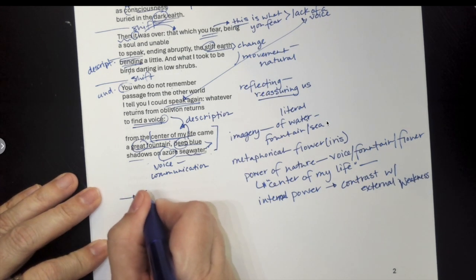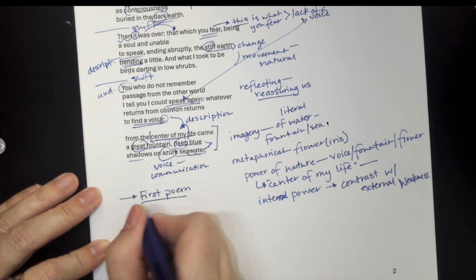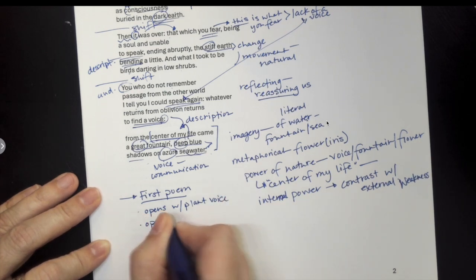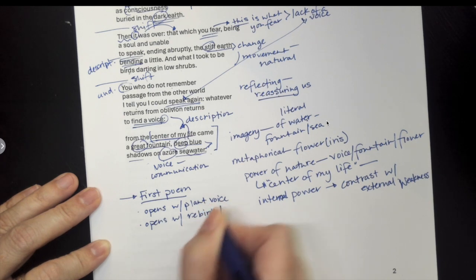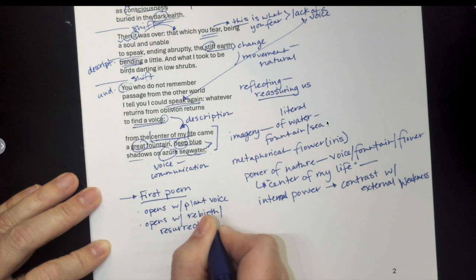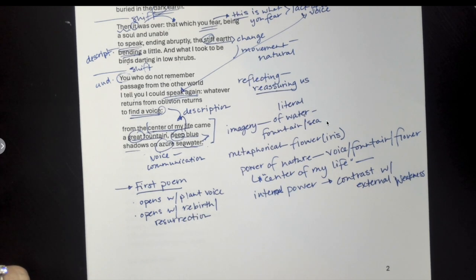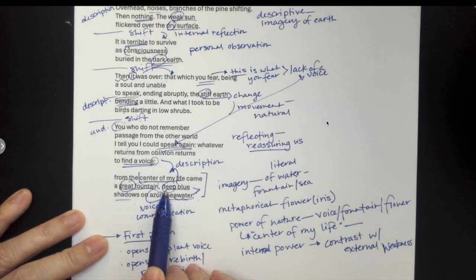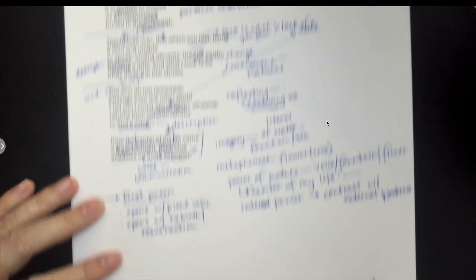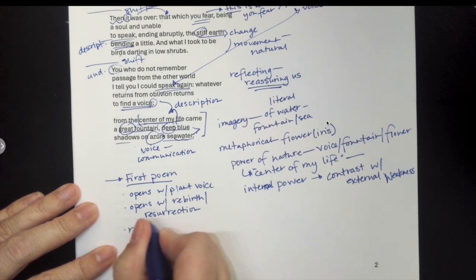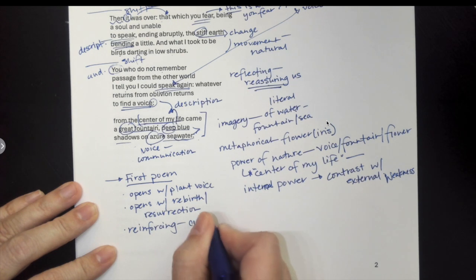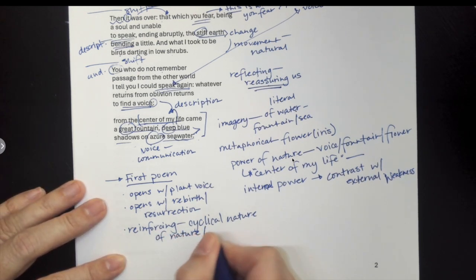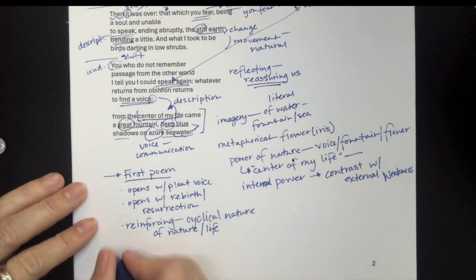So that really shows us a couple things about what we can expect from this particular collection. Because this is the first poem. This is our first poem in the collection. And so it establishes a lot of stuff for us. It opens with the plant voice. It opens again with the idea of rebirth and resurrection. This is not a poem that is necessarily telling us everything dies, ashes to ashes, dust to dust, we return to the earth and that's it. This is a poem that is about, again, kind of coming back, kind of reclaiming and finding your voice. And this idea, again, this reassurance that that is what will happen. And a lot of that is because it is reinforcing to us the cyclical nature of nature itself.